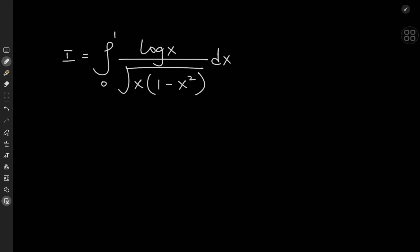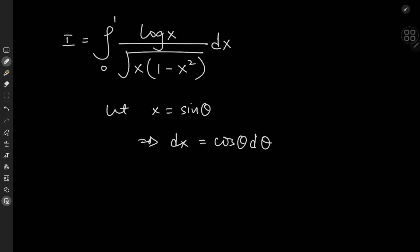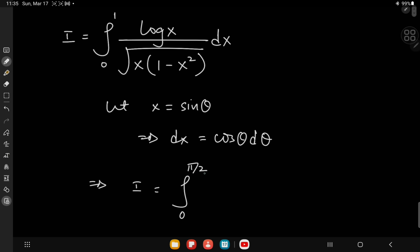We're going to start off with a very obvious looking substitution — it sort of seemed obvious anyway. Why not let x equal sine theta? This would imply that dx equals cosine theta d theta. And this means that I is now the integral from — as x approaches 0 we need theta to approach 0, and for x to approach 1 we need theta to approach pi by 2.